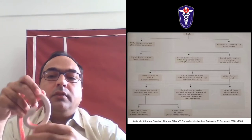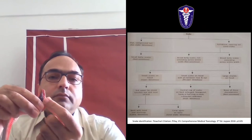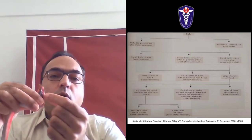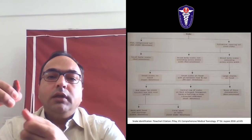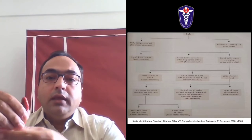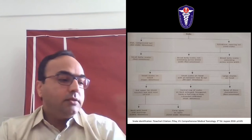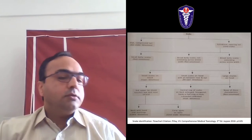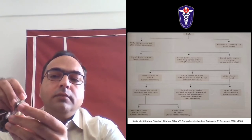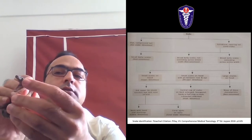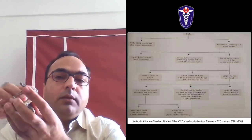If you examine the head and it has small scales, those are mostly vipers. Then small scales on the head with a pit between the nose and eyes - you can see the pit between the nose and the eyes - means it becomes a pit viper, which is venomous.